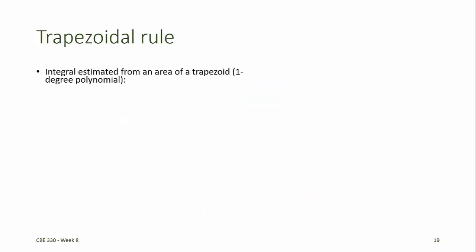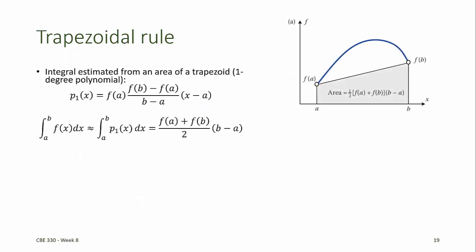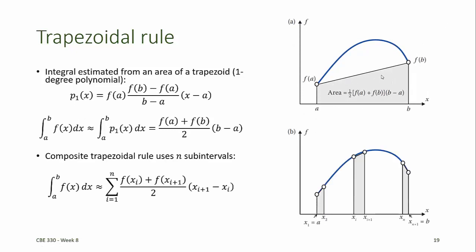The trapezoidal rule integrates by using a first-order polynomial, or a straight line, between the endpoints of the domain and calculating the area of the corresponding trapezoid. Similar to the rectangle rule, the trapezoid rule can also be improved by subdividing the domain into n subintervals and then summing the areas of those n representative trapezoids. Here, just a small number of the trapezoids are shown; trapezoids representing the entire domain would be used to calculate the integral.